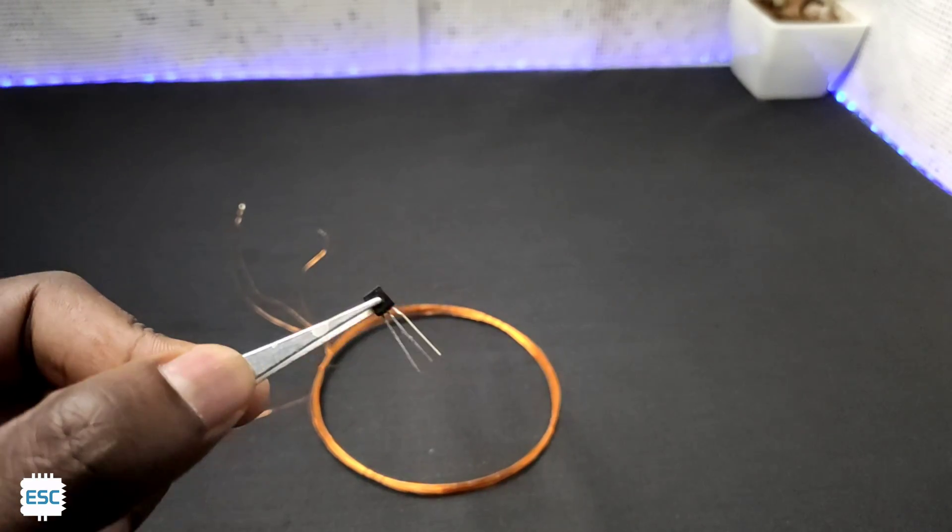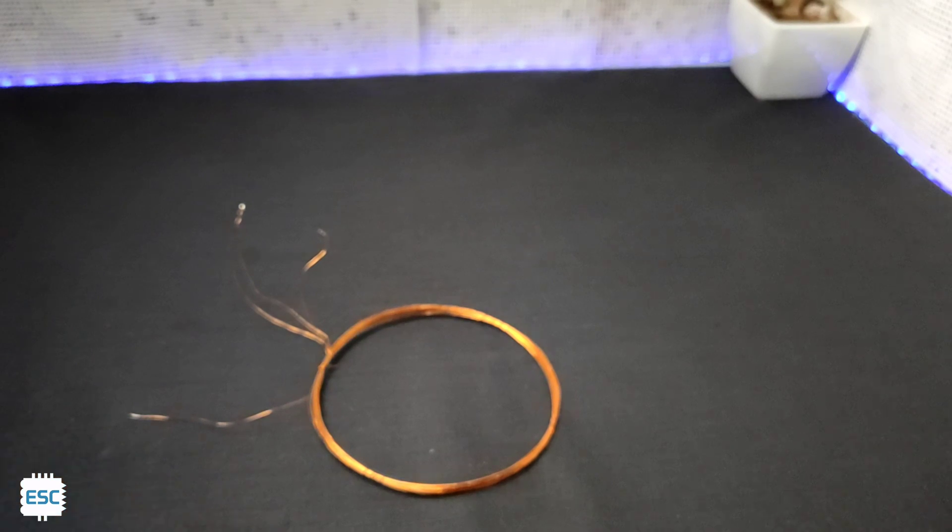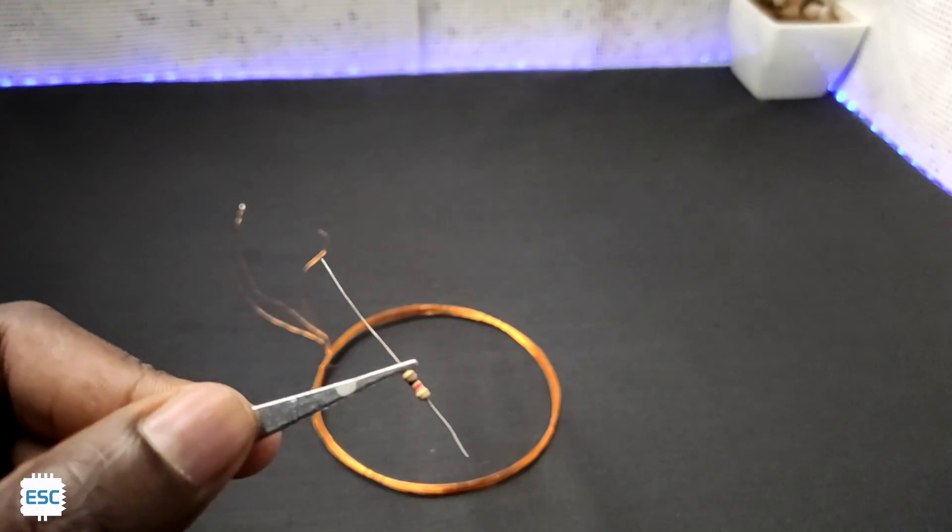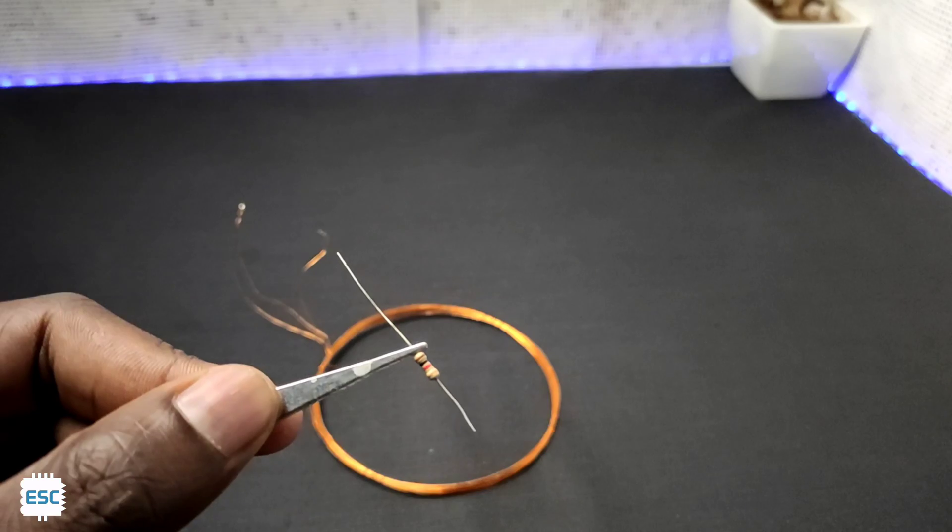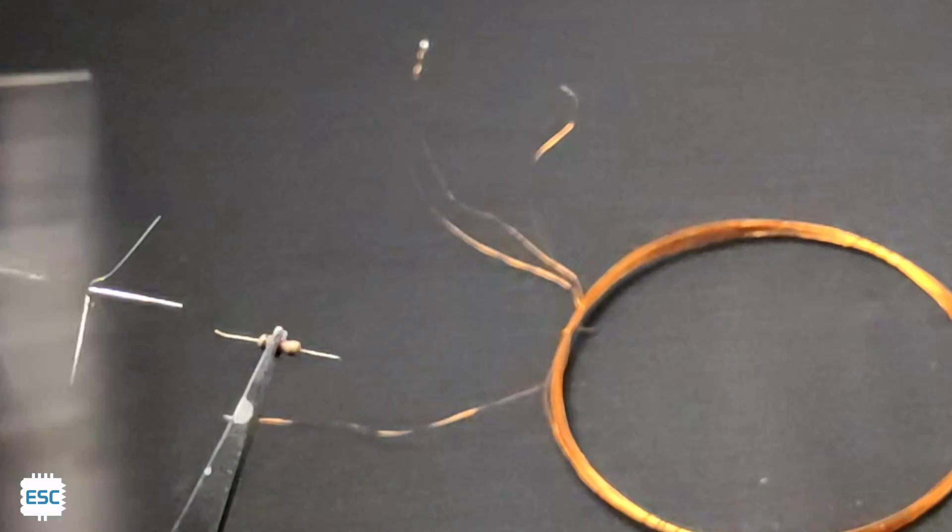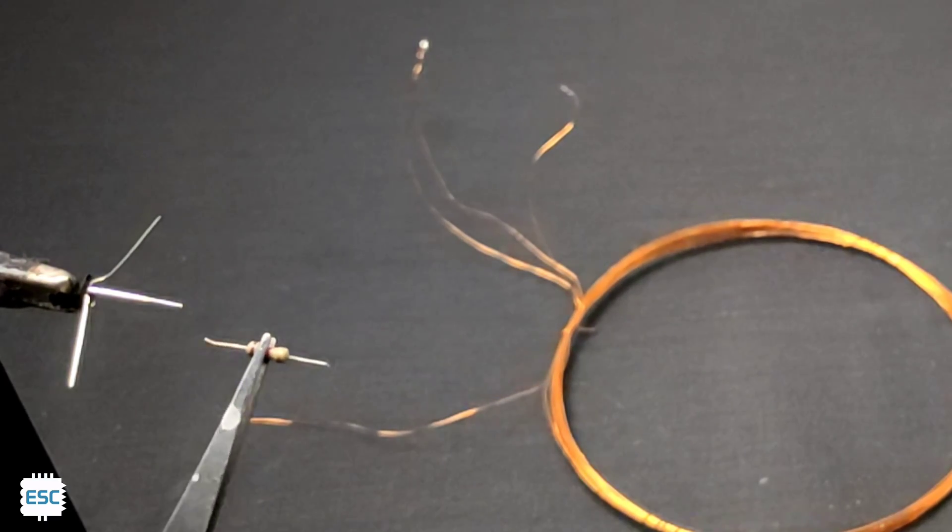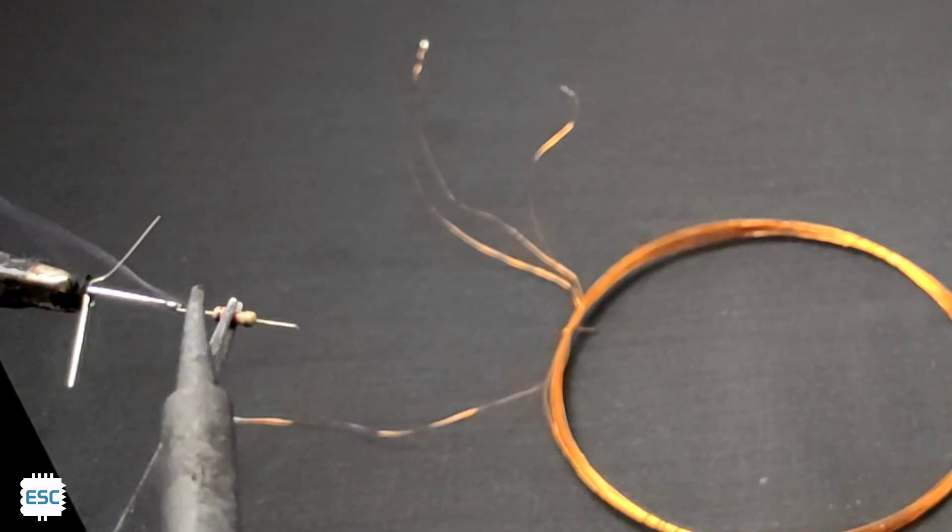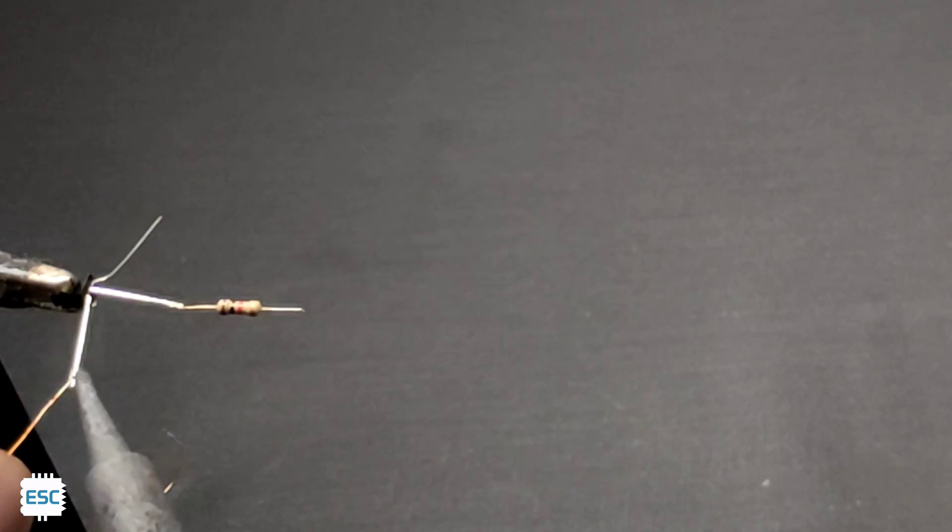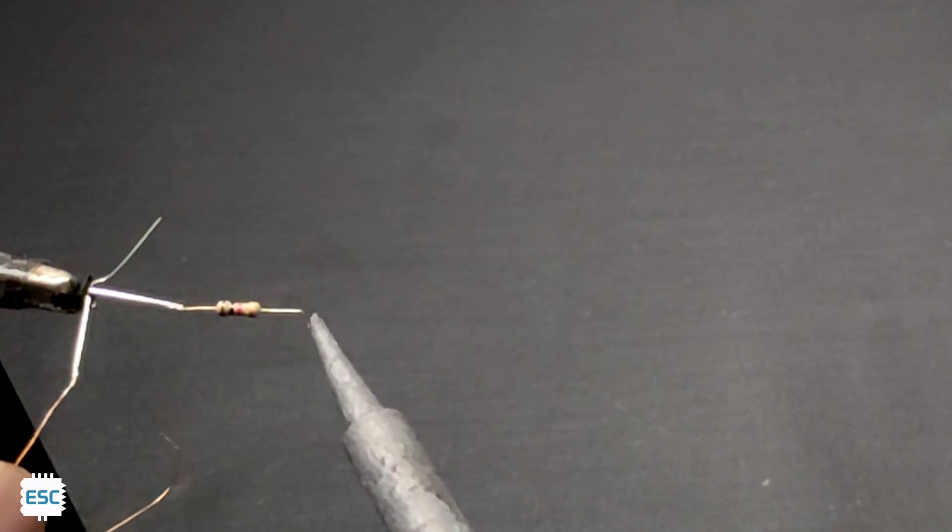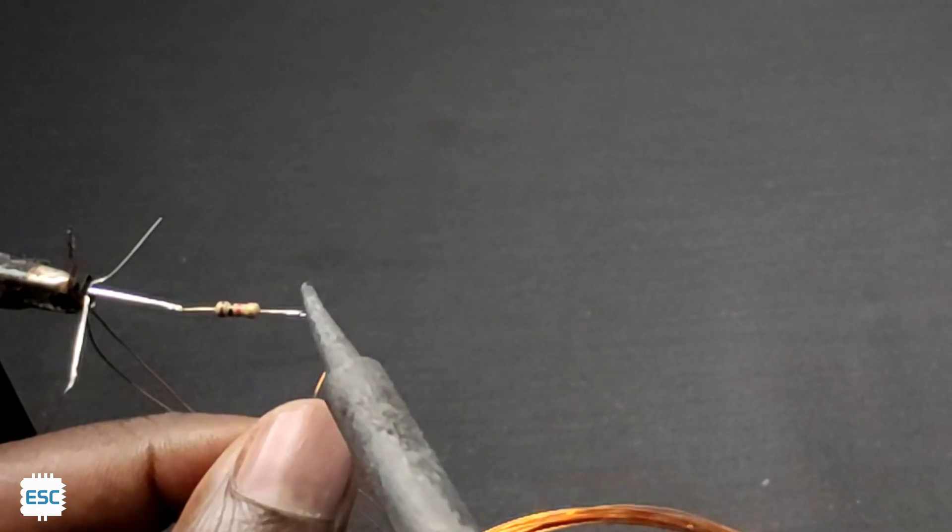For that we need an NPN transistor. Here I am using BC547 and a 1kΩ resistor. First I connected the resistor to the base of the transistor. I connected one end of the coil to the collector of the transistor. And I connected another end of the coil to the resistor end. That's all.